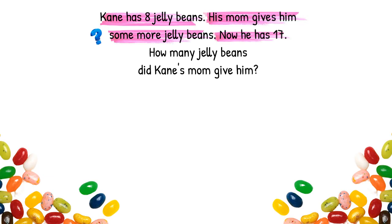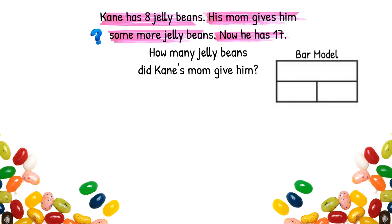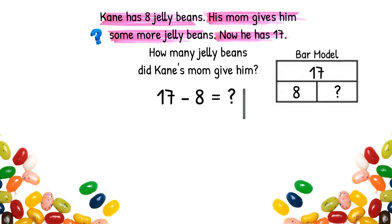I like to organize all my information with a bar model. We know how many jelly beans he has in all — he has 17 total, so that's going to go in the whole part of the bar model. We know that he started with eight jelly beans, so that's one of the parts. We're going to put that in one of the parts of the bar model. We don't know the other part, so we're going to put a question mark. Now we have to think of our equation. When we have a whole and a part, I like to do subtraction. So our equation is going to be 17 minus 8 equals question mark.